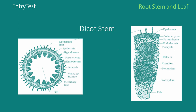The next topic is the dicot stem. Here are two sections of the dicot stem. The outermost is the epidermal layer, including the epidermal hairs. The epidermis is always the outer protective layer; it is covered by a thin layer of cuticle and sometimes has a few stomata and trichomes on it.